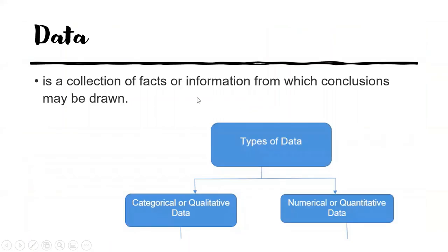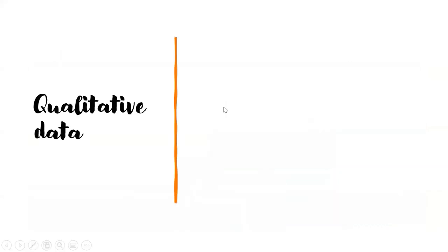Now let's talk about data. Data is a collection of facts or information from which conclusions may be drawn. So there are two types of data. These are categorical or qualitative data, and the other one is the numerical or the quantitative data.